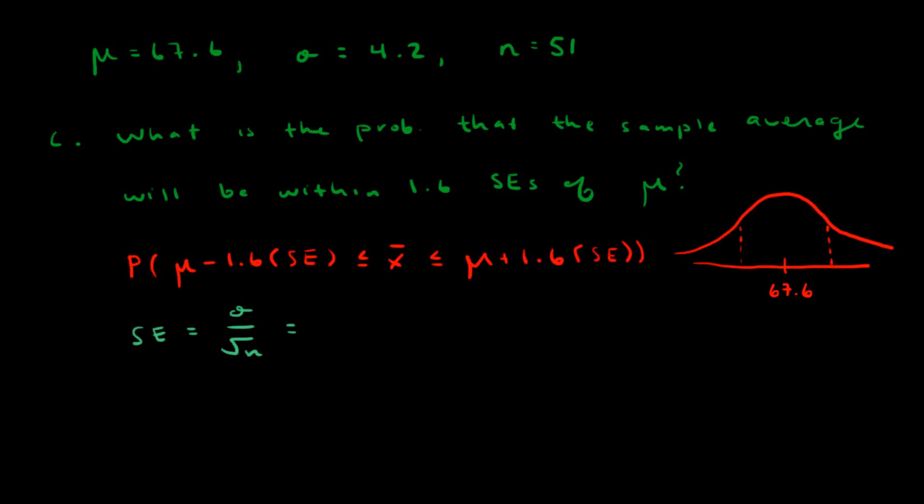Question 7c asks what is the probability that the sample average will be within 1.6 standard errors of the population mean mu. We're given these parameters: the population mean is 67.6, population standard deviation is 4.2, and the sample size is 51.